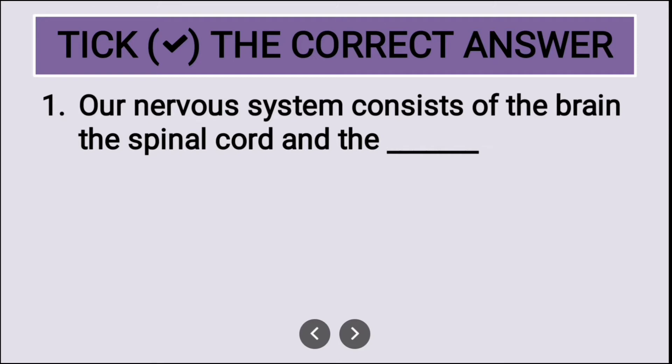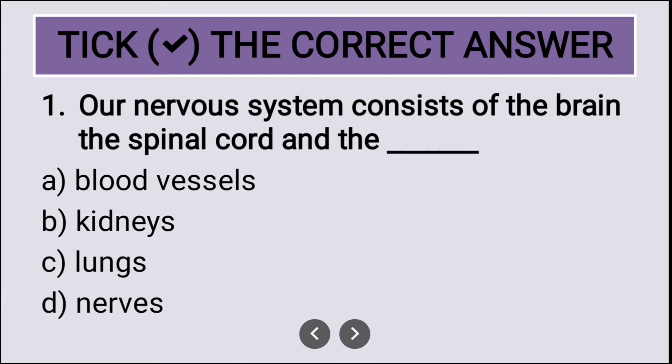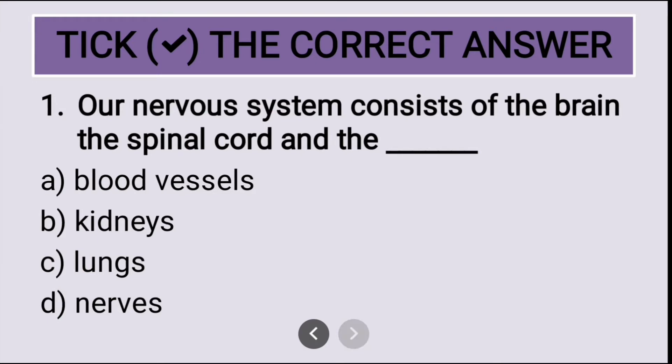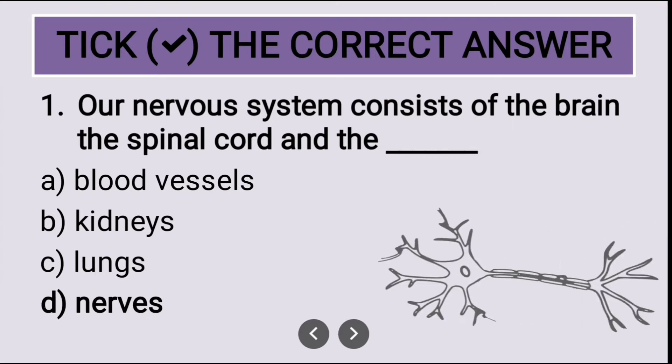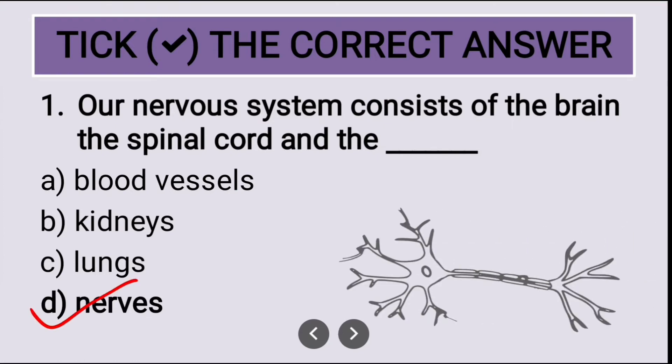First question: tick the correct answer. Our nervous system consists of brain, the spinal cord, and the blank. The options are blood vessels, kidneys, lungs, and nose. The correct option is nose. Nose, along with the brain and spinal cord, forms the nervous system.